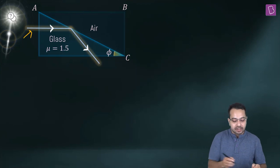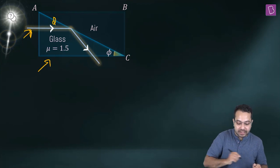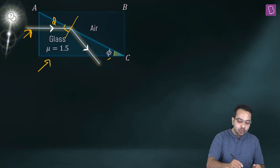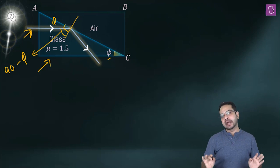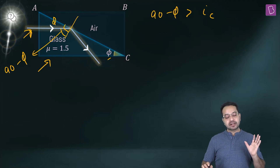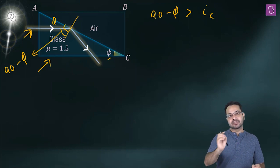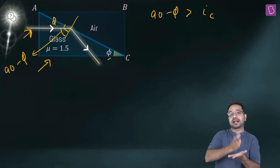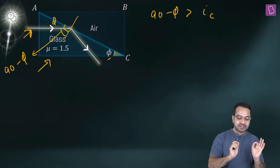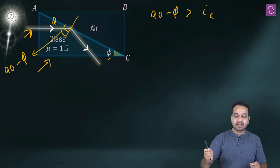The incident light ray and the slab surface are parallel, so this angle becomes φ. Drawing a normal on the boundary, the angle of incidence is 90 − φ. For total internal reflection, 90 − φ must be greater than the critical angle. So we find φ when 90 − φ equals exactly the critical angle — that gives the maximum φ.